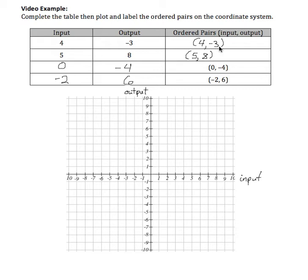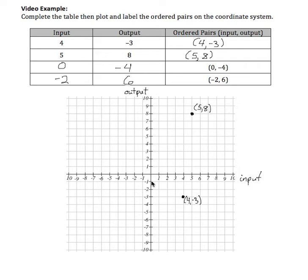I'm going to write input here with the horizontal axis and output here with the vertical. Let's look at (4, -3): 4 means to travel 4 in the positive direction on the horizontal axis, and negative 3 means to travel in the negative direction on the vertical axis. So I'm going to plot and label (4, -3). Then (0, -4): 0 in the horizontal means stay right here, and then negative in the vertical direction means to go down, so (0, -4).